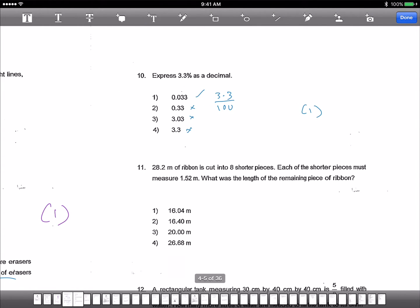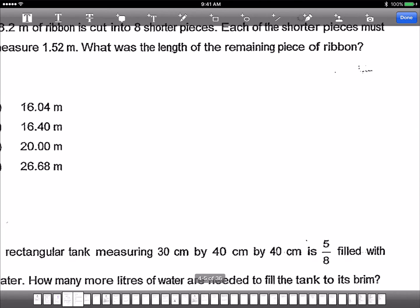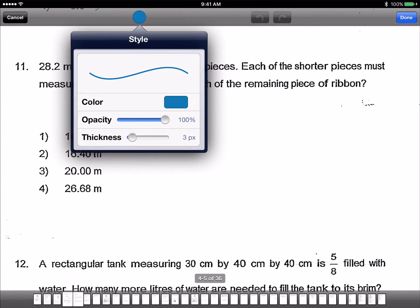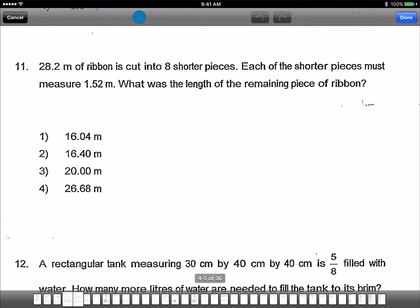Next, 28.2 meters of ribbon is cut into 8 shorter pieces. Each of the shorter pieces must measure 1.52 meter. What's the length of the remaining piece? So we take 1.52 times 8.